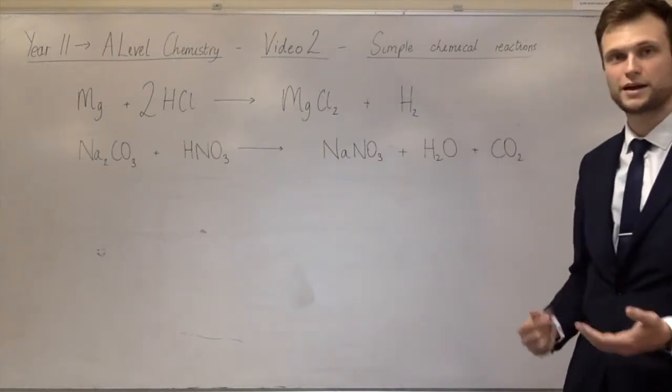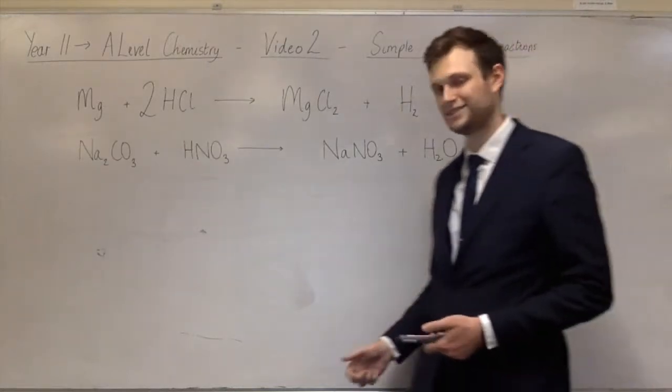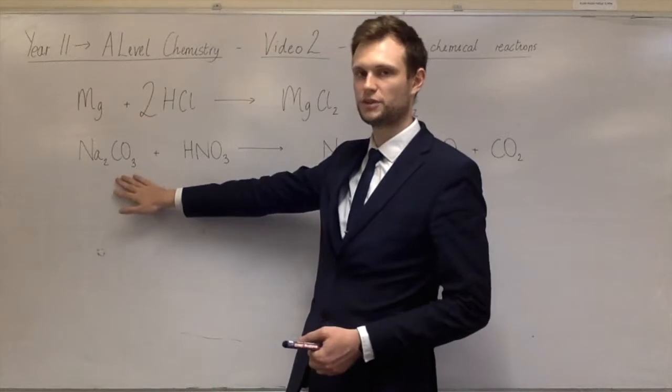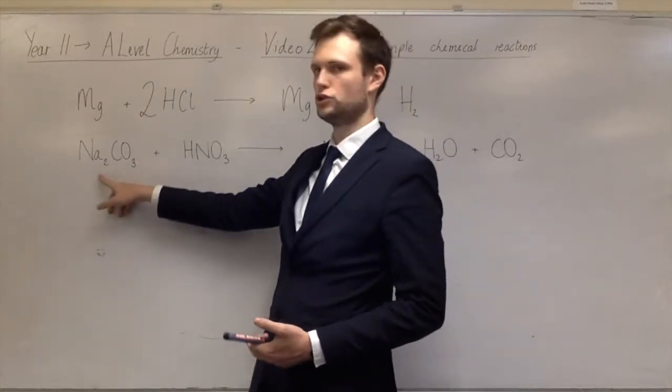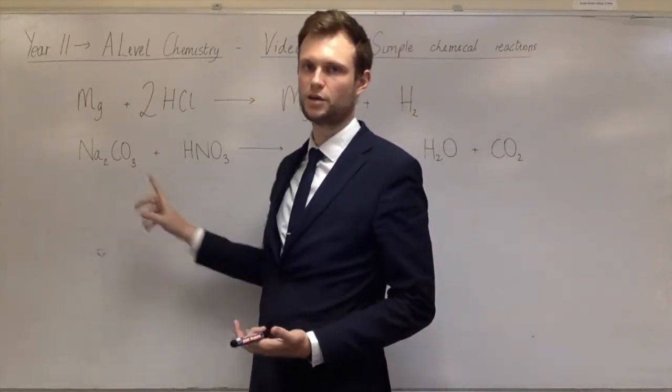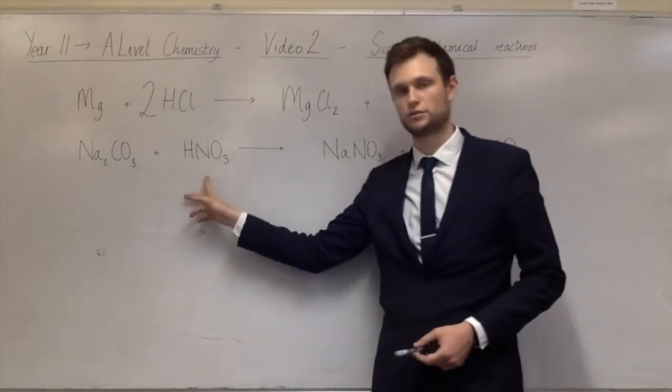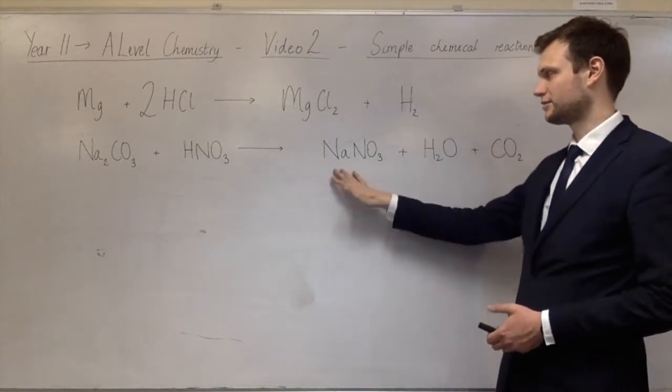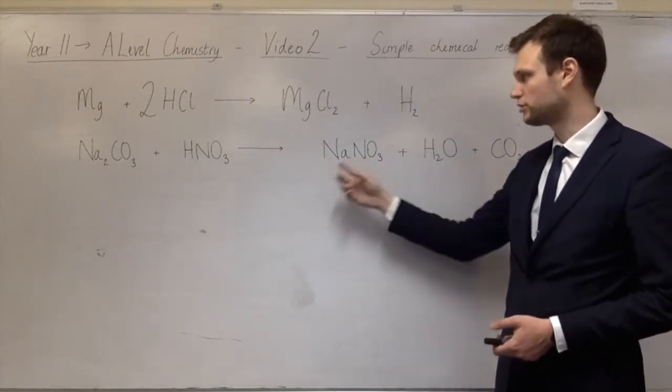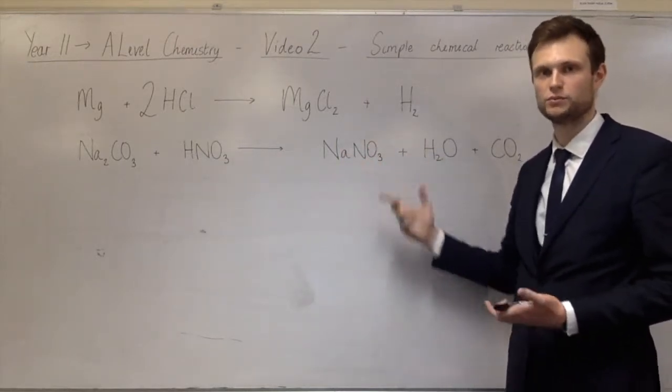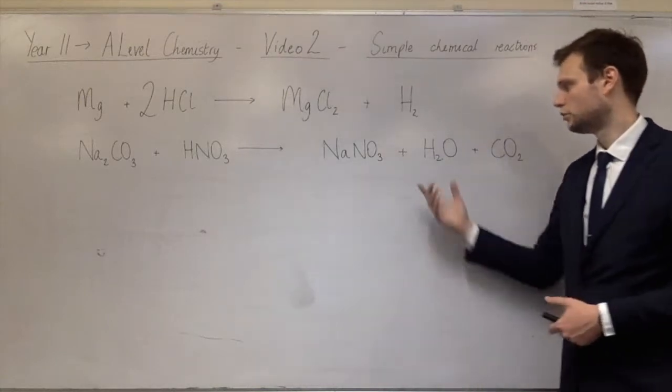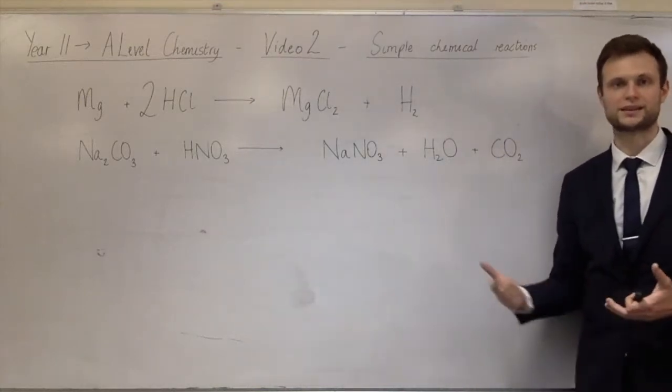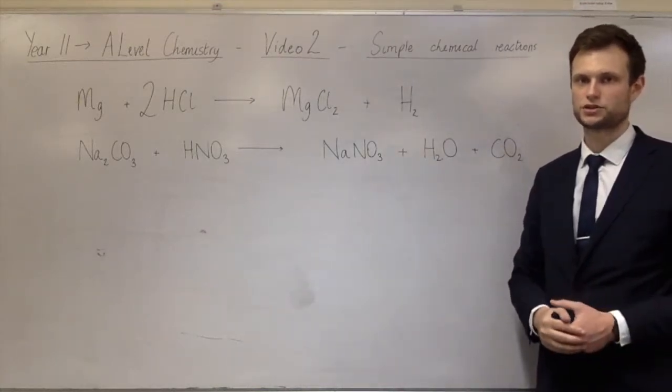The next one is a metal carbonate plus acid reaction. So this is sodium carbonate. Notice it's Na2 because sodium is 1 plus, carbonate 2 minus. HNO3, again NO3, 1 minus. H plus, 1 plus. To make sodium nitrate, and they're both 1. So 1 plus and 1 minus means you need 1 of each. Water carbon dioxide because it's an acid plus metal carbonate reaction.